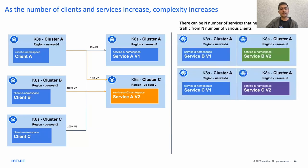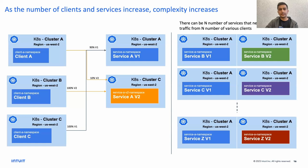Supporting these use cases for multiple clients scattered across different clusters managed by different teams is not easy. We've considered just one service required by multiple clients, but the same use case can apply to multiple services across multiple clients across the entire Intuit — service B, service C, service Z in different clusters used by different clients. How will we manage all these configurations — who reaches which service with what percentage of traffic routed to which particular stack?